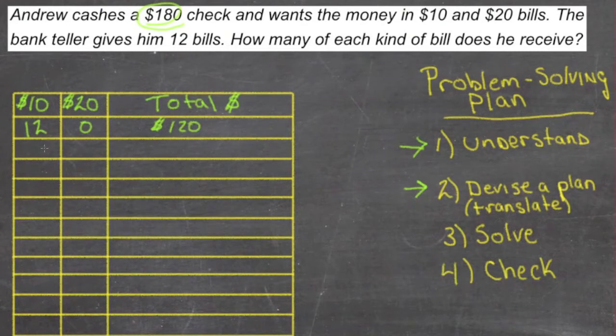That's obviously too little. So let's try 10 $10 bills and two 20s. So that would be 10 times 10 is 100 and 2 times 20 is 40. So that's $140.